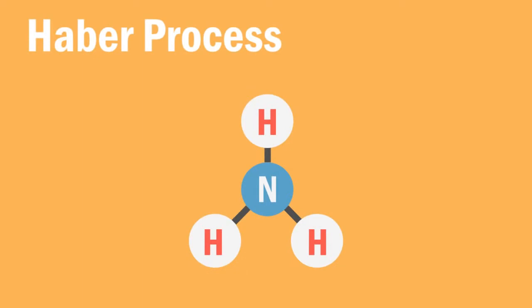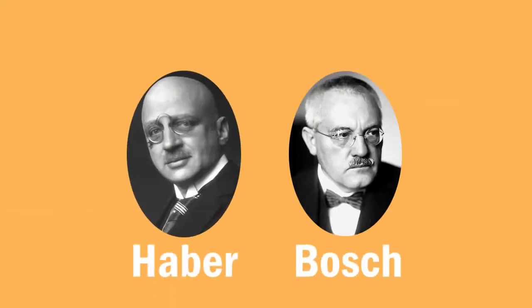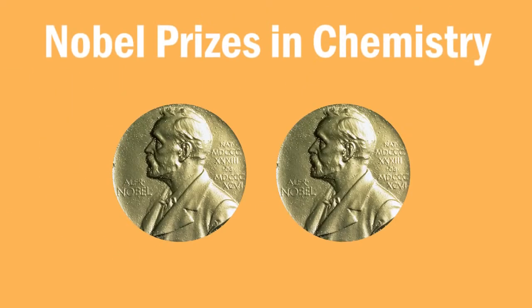In this lesson, we will learn about the Haber process to produce ammonia, developed during World War I by Fritz Haber and Karl Bosch. For their efforts and contributions to developing large-scale industrial processes, they were awarded Nobel Prizes in Chemistry.